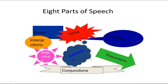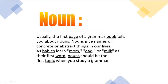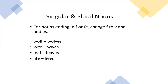Let's discuss number one, which is the noun. Usually the first page of a grammar book tells you about noun. Noun gives the name of concrete or abstract things in our life — as babies learn 'mom,' 'dad,' or 'milk' as their first words. When learning any language, you start with grammar, and within the parts of speech you first study the noun. There are two types of nouns: singular and plural.